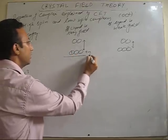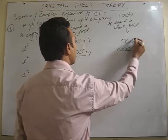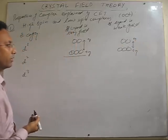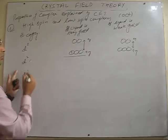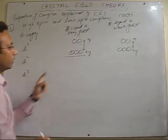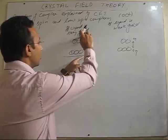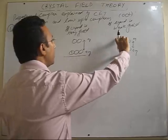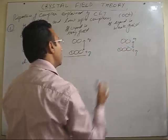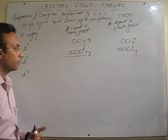Which level? t2g. This is eg. This is the configuration. If the configuration is D2, okay. Now, if this is the strong field ligand case, if it is a weak field ligand, then only also, it will have the same configuration.